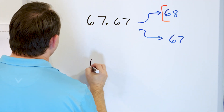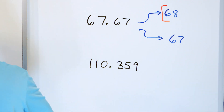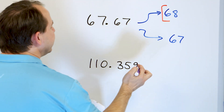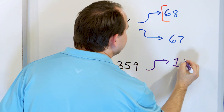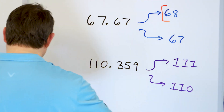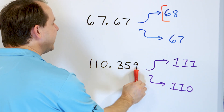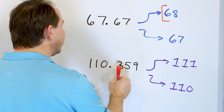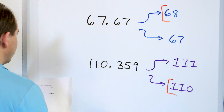Our last problem: 110.359. The whole number is everything in front of the decimal — it's 110. We can either round up to 111 or round down and stay at 110. We look just beyond the decimal to the tenths place — only the 3 matters. Since 3 is less than 5, we round down to 110.